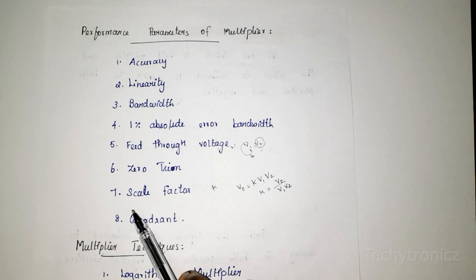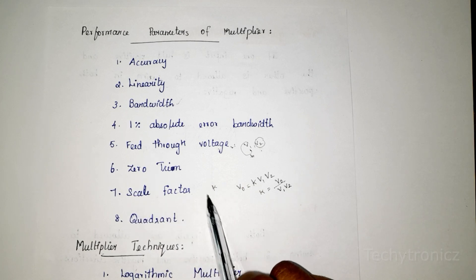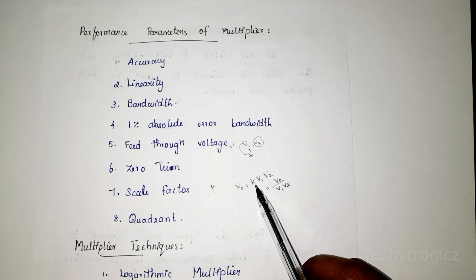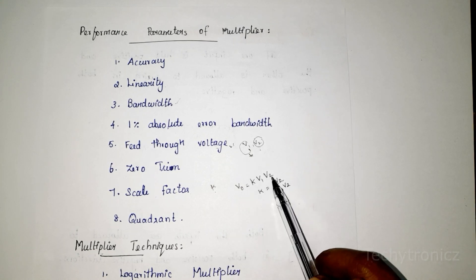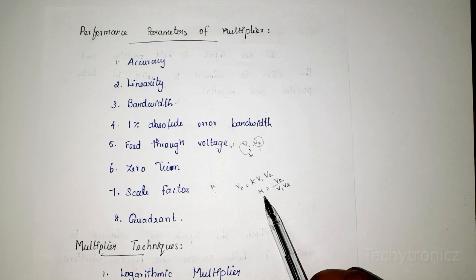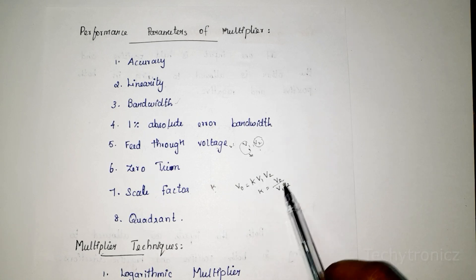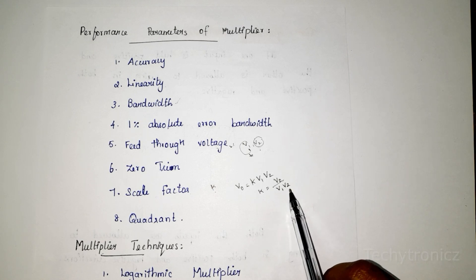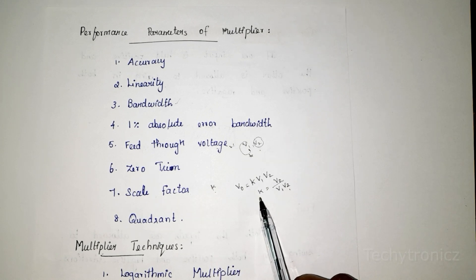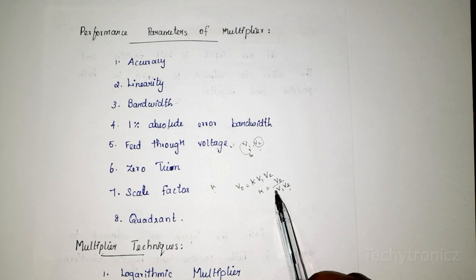Scale factor is the proportionality constant K, where V0 = K × V1 × V2. From this, K is equal to V0 divided by V1 into V2, which is the ratio of output voltage to the product of the two input voltages.